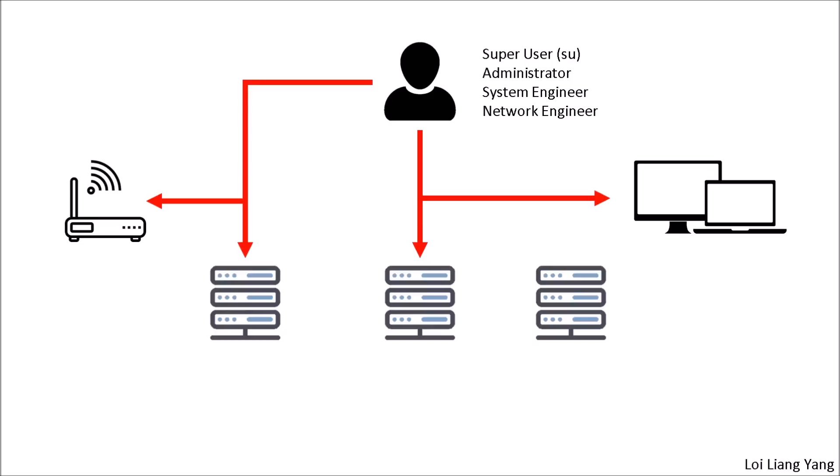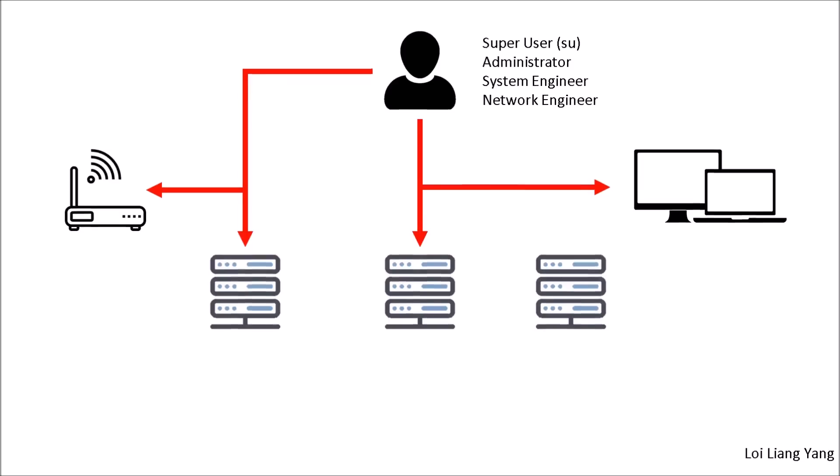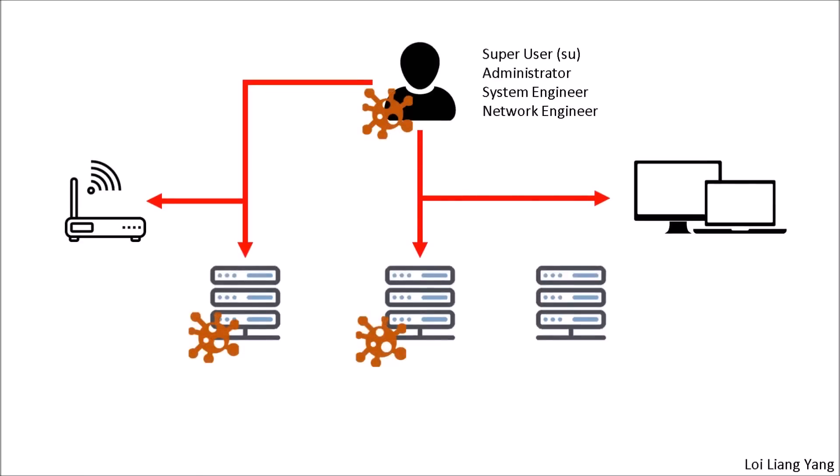If you can directly log in to a system used by the CEO, chief financial officer, or anyone with empowered authority to manage a company, then you can look into the critical and sensitive data on those machines. This is the core reason for privilege access management — managing privileged accesses in the environment. If your account is compromised — whether through a cyber attack or a phishing email campaign — you could jeopardize the entire operation of the enterprise. It is therefore imperative that we manage privileged accesses across all critical systems, administrator and super user accounts, and all accounts that can impact IT assets.